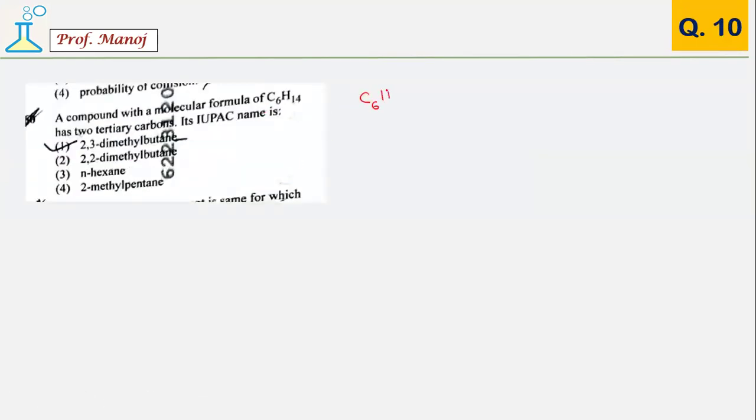They have given a compound C6H14 and out of all these isomers, they want a structure where two tertiary carbon atoms are present. When you see four carbon atoms in straight chain with one methyl group here and another methyl group here, this is a tertiary carbon and this is a tertiary carbon. Option number 1, 2,3-dimethylbutane is an isomer which contains two tertiary carbon atoms.